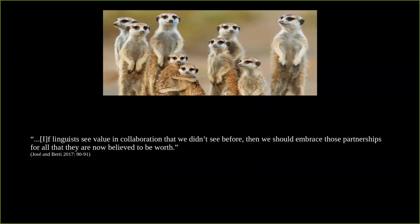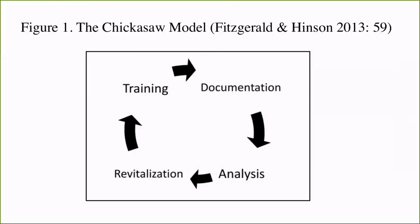As linguists continue to promote collaboration with speech communities in the language documentation process, it's also possible to observe some commonalities and differences in the collaborative methods employed by different projects. Who exactly are we collaborating with and how? What is the impact of our collaborations, both on the output of the documentation process and the community itself? Some proposed models for collaborative language documentation, such as the Chickasaw model, are rooted in the experiences of language documentation practitioners working with organized and independently funded endangered language communities. Many types of activities and outputs assumed by the model cannot easily be applied to all community contexts.